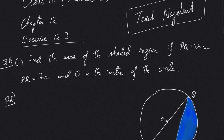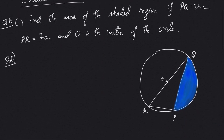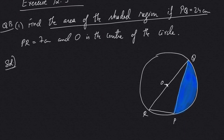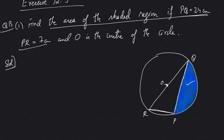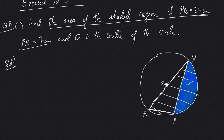From the team of Teach Nagaland, the first question: find the area of the shaded region if dimensions PQ and PR are given. PQ is this dimension that is given, PR is this dimension which is given, and O is the center of the circle. We are supposed to find out the area of the shaded blue portion. Since O is the center, this straight line passing through the center is the diameter, meaning this portion is a semicircle.